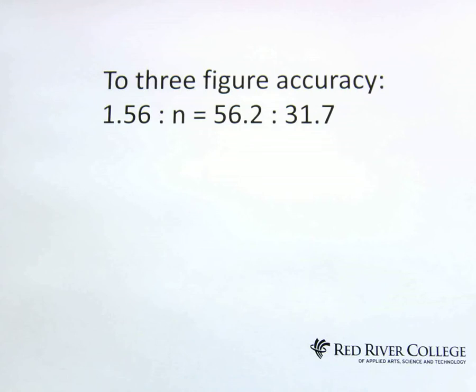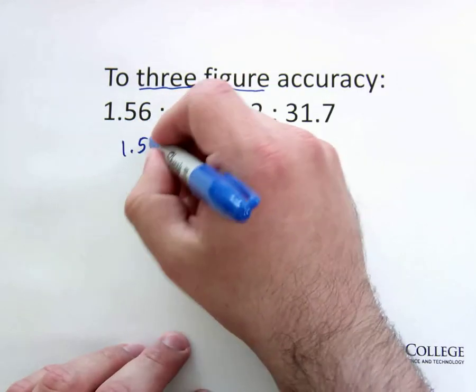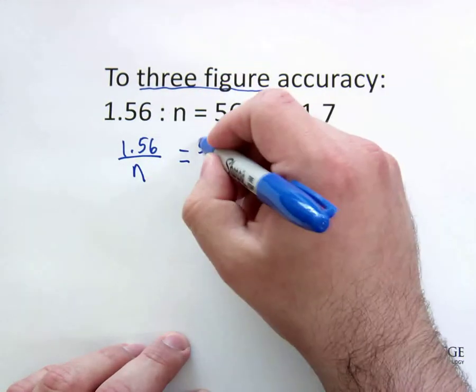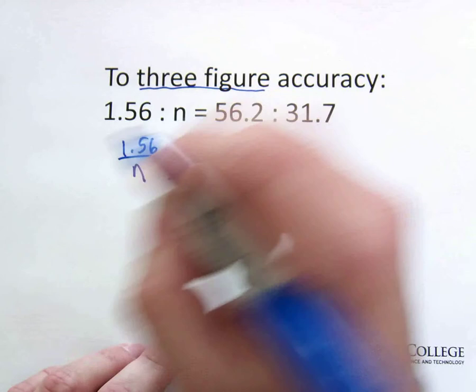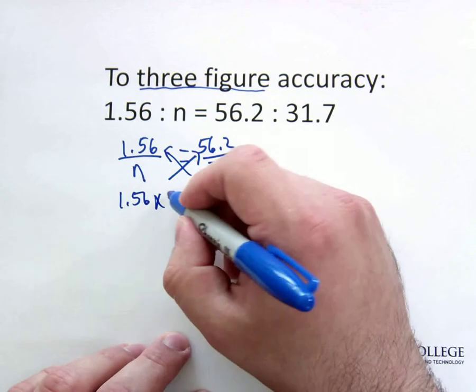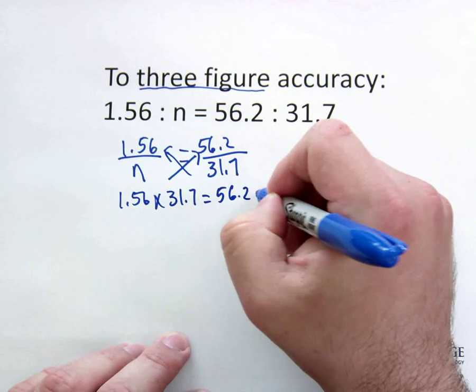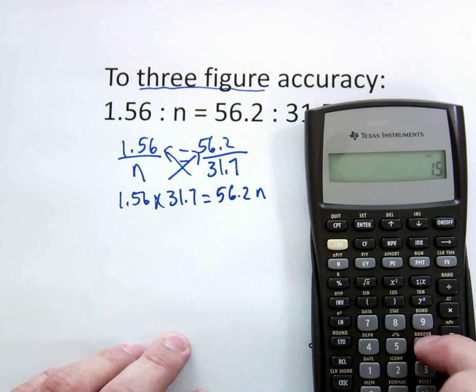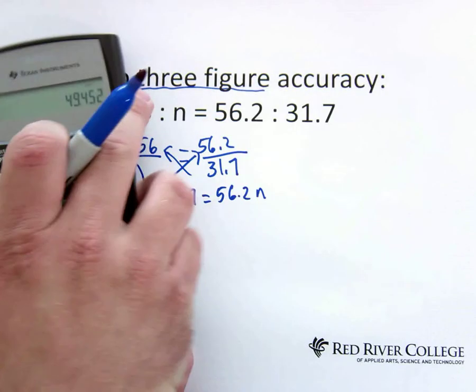Let's try a little bit harder one. Now we've got some decimals in play, and the question wants us to go three-figure accuracy. So first thing, make a fraction. 1.56 over n is equal to 56.2 over 31.7. We will now do our cross multiplication. 1.56 times 31.7 is 56.2n. Bring in our calculator. 1.56 times 31.7.